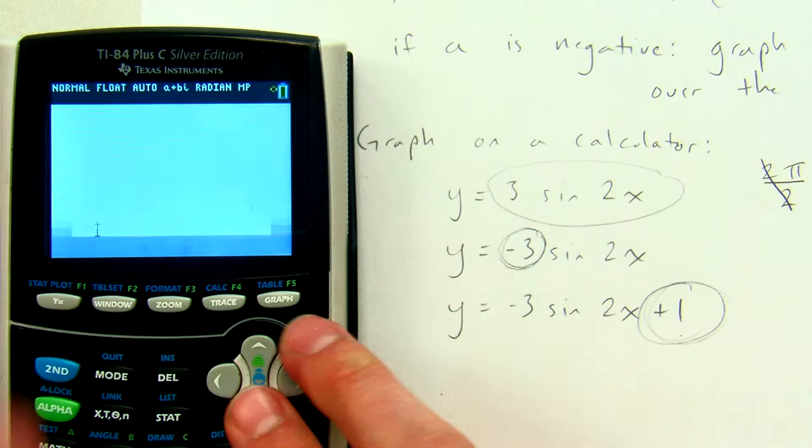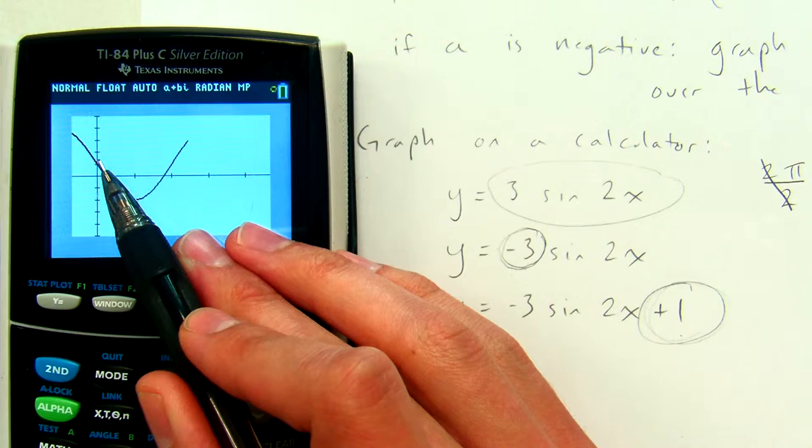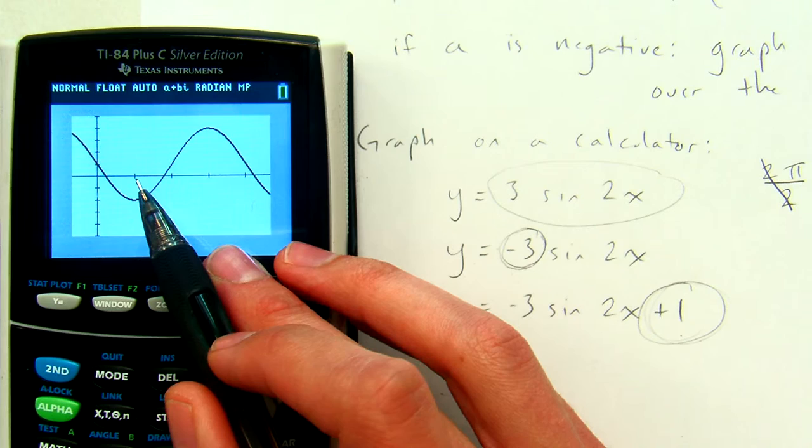I'm going to take off the red graph now so we can just look at the black graph. And we'll see that instead of starting at 0, 0, it moved up 1. Now it starts at 0, 1.